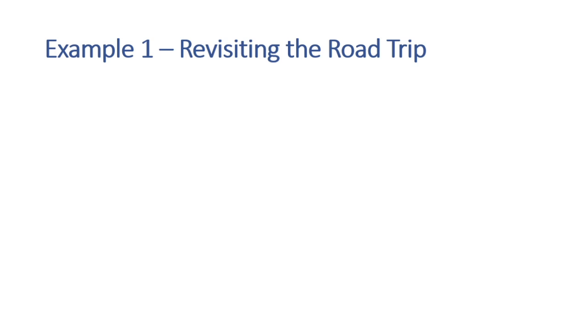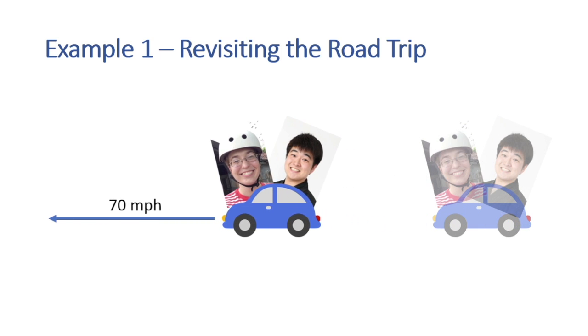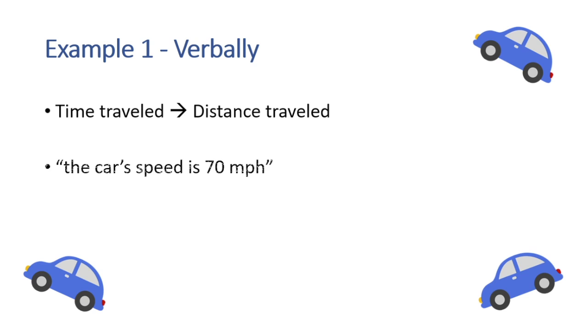In our first example, we will be revisiting the road trip we took in our intro video. Suppose Tatsu and I are driving out to Boulder, Colorado from Kansas City, Missouri, and we want to describe the relationship between time and distance travel. A common way to do this would be to simply say the car's speed is 70 miles per hour. Though perhaps another way to express this that makes the mathematical relationship between distance and time more clear would be to say every hour the car travels 70 miles. This would be a verbal representation of our function.